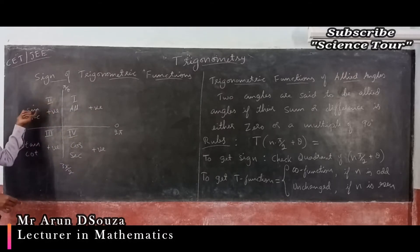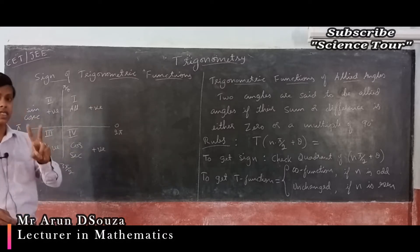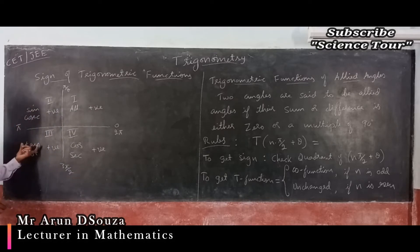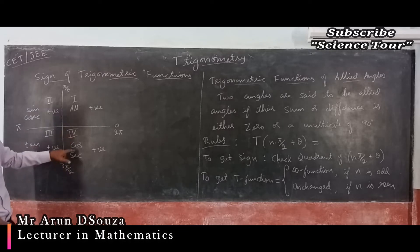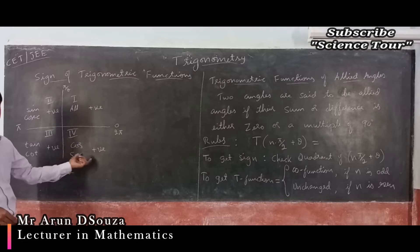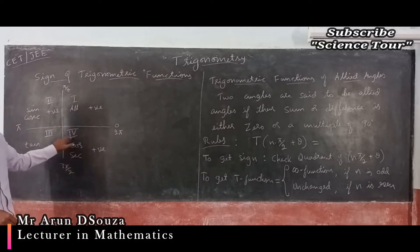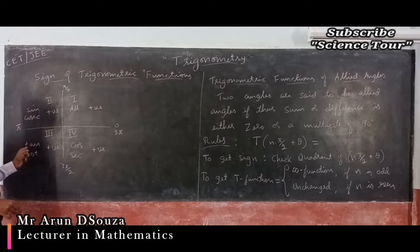In the second quadrant, sine and cosec are positive; all other four functions are negative. In the third quadrant, tan and cot are positive; the rest are negative. In the fourth quadrant, cos and sec are positive; the remaining four functions are negative.